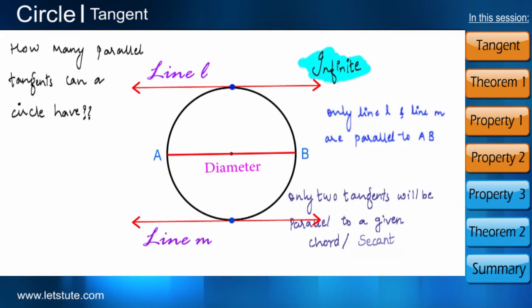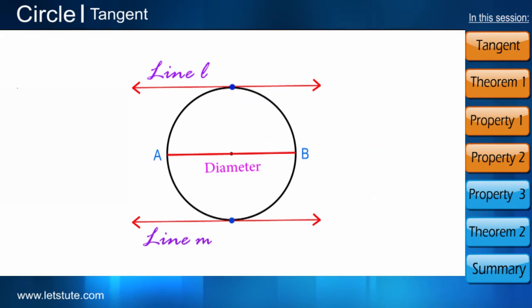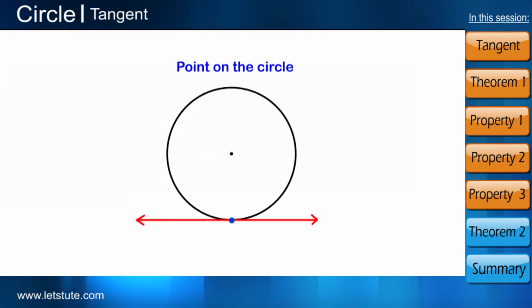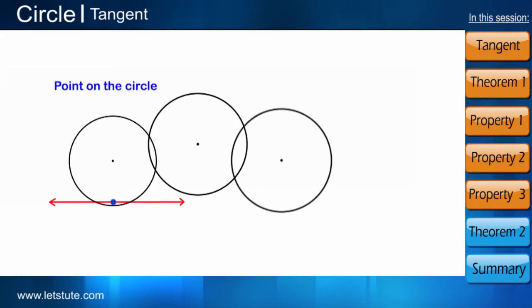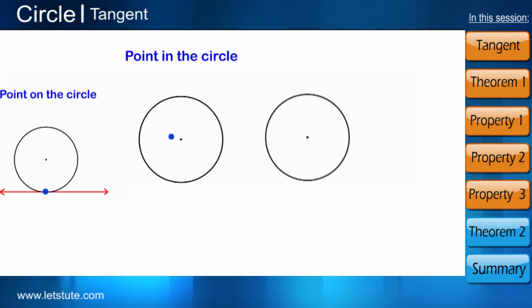This is one property of a tangent. Let's move to another property of the tangent. Now let us see, as we know that only one tangent can pass through one point on the circle, but then how many tangents will pass from a point in the circle and a point outside the circle.